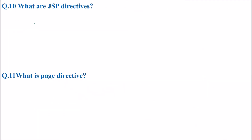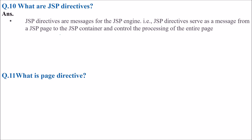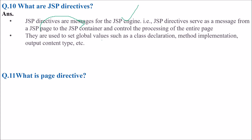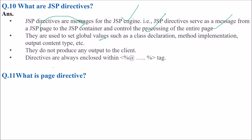What are JSP directives? JSP directives are messages or instructions for the JSP engine — they serve as a message from a JSP page to the JSP container. They control the processing of the entire page and are used to set global values like class declaration, method implementation, and output content type. They do not produce any output to the client. Directives are always inside the angle-bracket-percent-at-sign syntax, such as page directive and include directive.